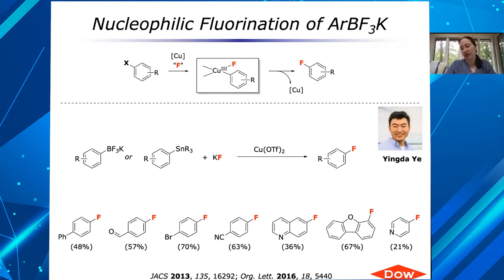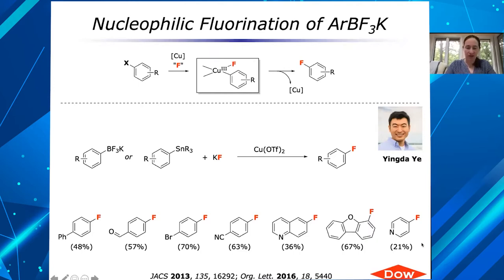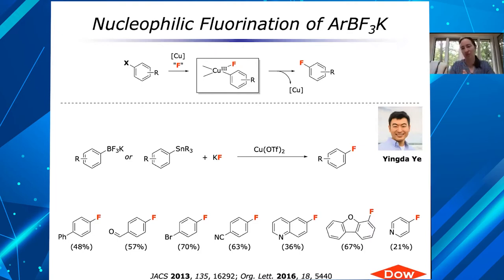We don't entirely know why the yields are low. In some cases, we're doing these with boron reagents and we see some proto-deboration, so that's definitely a problem with some substrates. In some cases, I think they are coordinating to the copper. In some of our radiochemistry, we use substrates like this and they actually work pretty well. So some of it just needs a little more optimization, but I think there's a combination of problems: some binding to the copper, some proto-deboration, and some that with focused optimization we could get to work better.